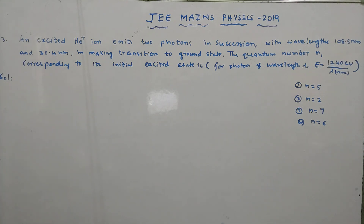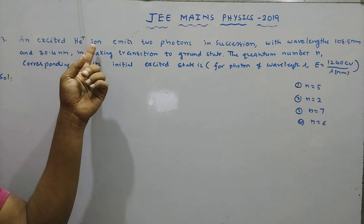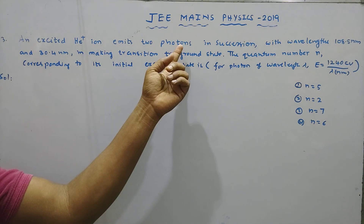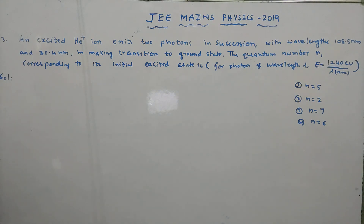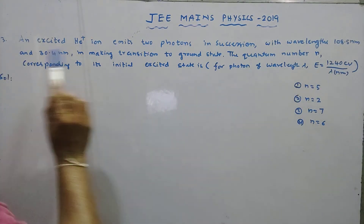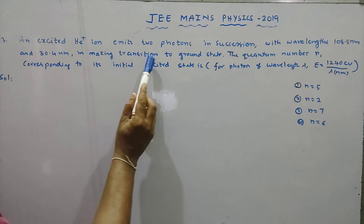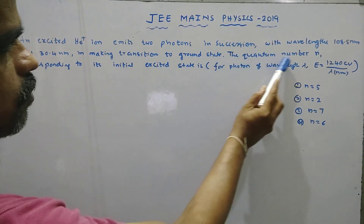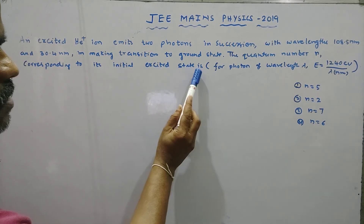Welcome to Smart Academy. We are giving IIT JEE Maths Physics 2019 question with solutions. We have one question here: an excited helium plus ion emits two photons in succession with wavelengths 108.5 nanometer and 30.4 nanometer, making transition to ground state. The quantum number n corresponding to its initial excited state is?